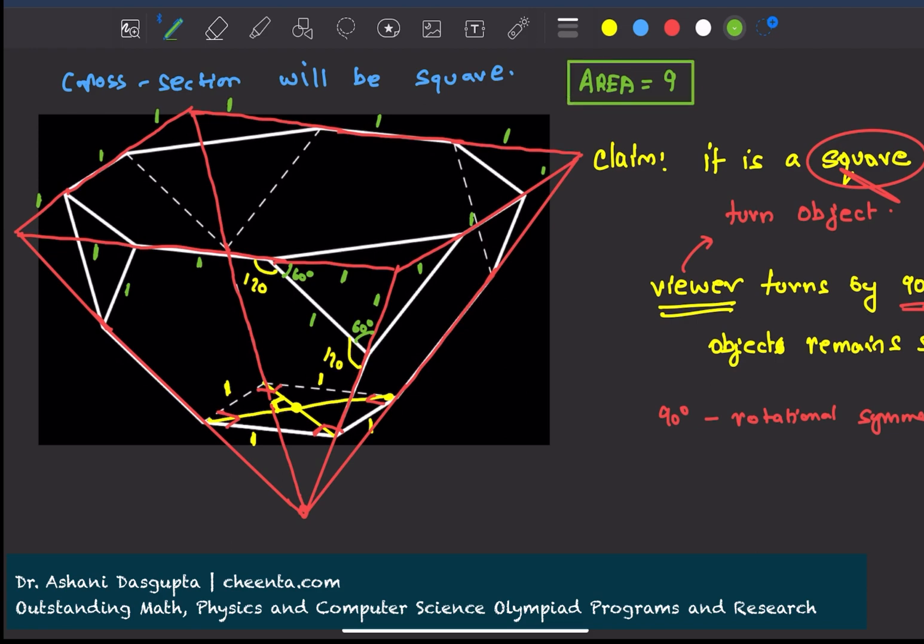In some of the solutions available on the internet, they claim that these two sides are 90 degrees without giving the argument for symmetry.